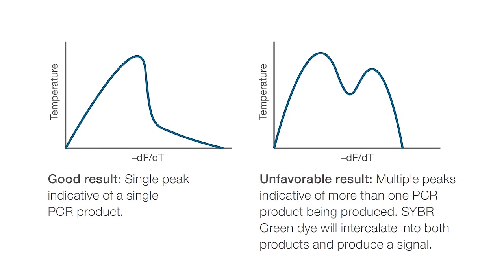Getting back to our experiments to optimize primer concentrations, the next step is to evaluate the CT and run melting curves, also known as a dissociation curve, for each primer concentration combination. If the dissociation curve shows primer dimers, there are two options: A. Start over and redesign the primers. B. Alter cycling temperatures to remove primer dimers.